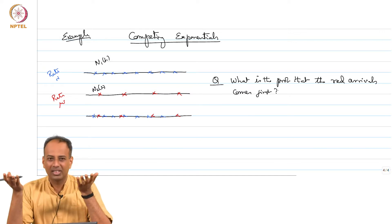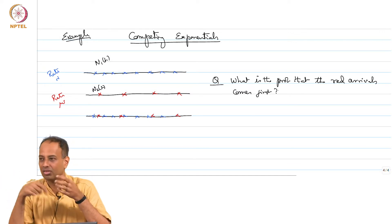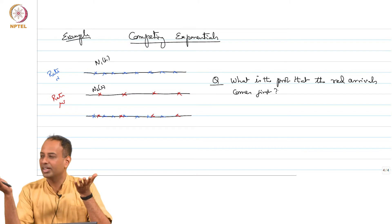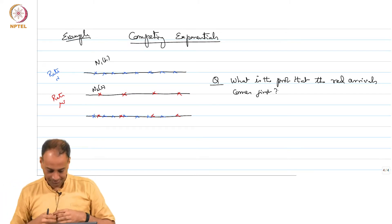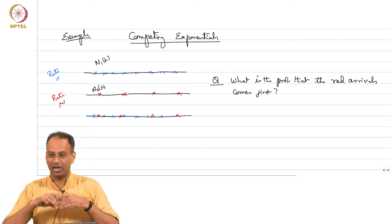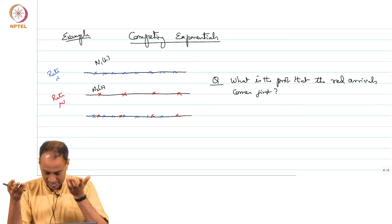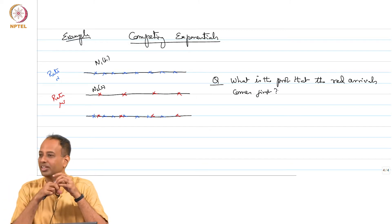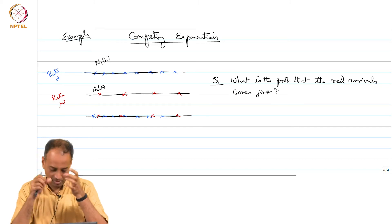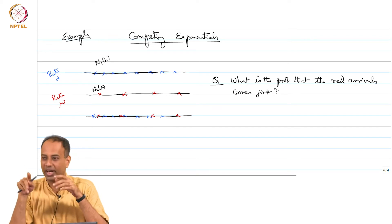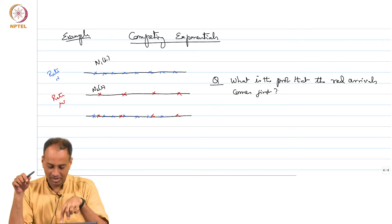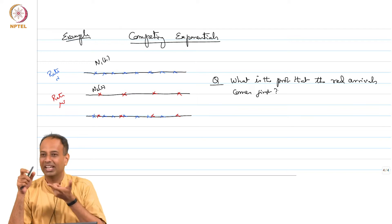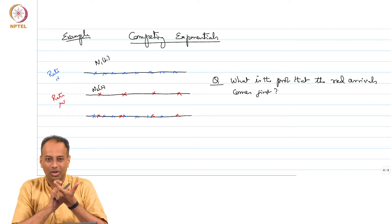I am starting at some time, which I can take by memorylessness to be the origin. I am starting these two processes off, or you can start at any time t and start looking at these two processes. There is a point: you could either have the red one coming first or the blue one coming first. That is why I have called it competing exponentials or competing Poisson processes, because the red process is competing with the blue process.